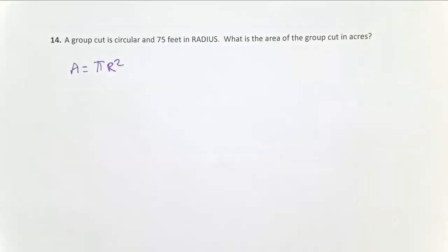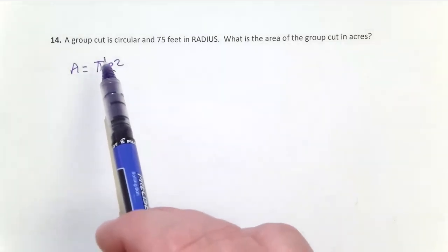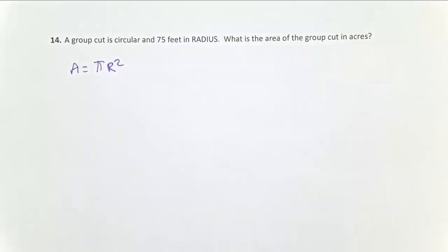Alright, problem number 14. We're doing group selection, a selection silvicultural system, a regeneration method. In this particular case, we're cutting roughly circular openings about 75 feet in radius.